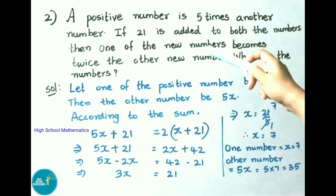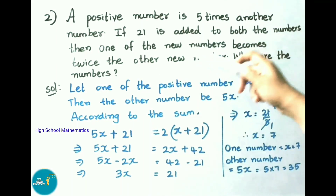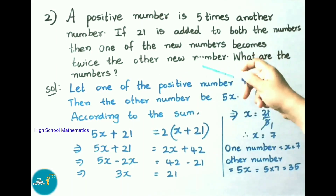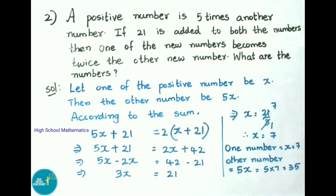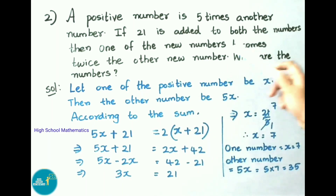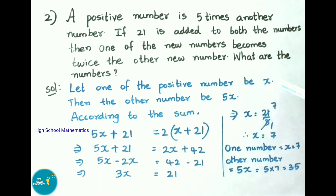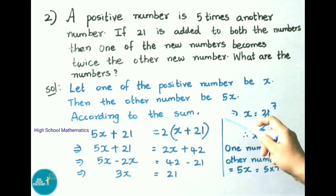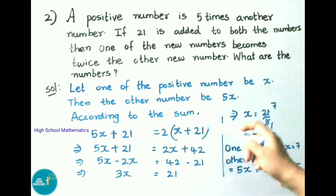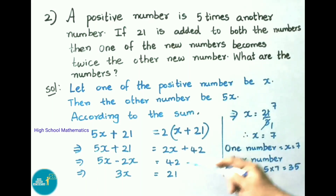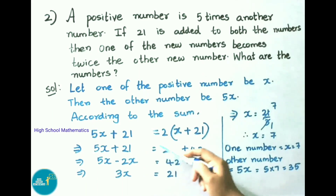Question number 2: A positive number is 5 times another number. If 21 is added to both the numbers, then one of the new numbers becomes twice the other new number. What are the numbers? Let us see the solution. Let one positive number be x, then the other number is 5x.